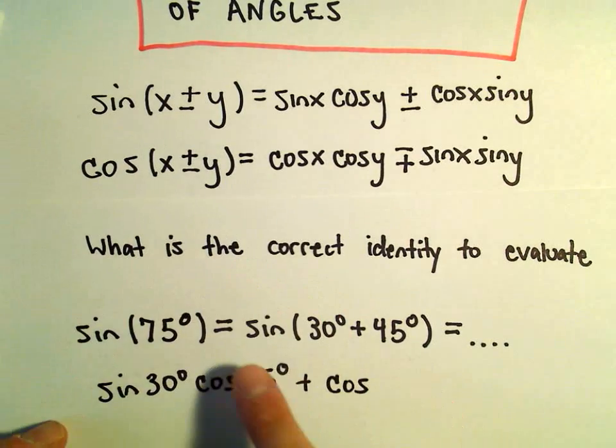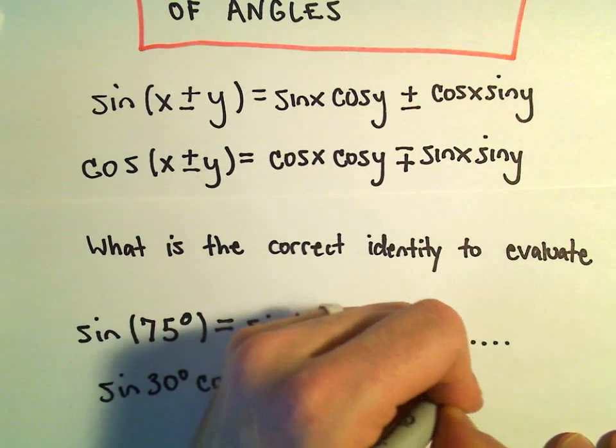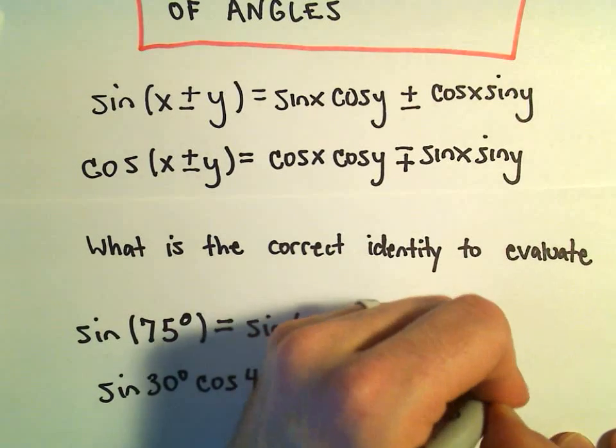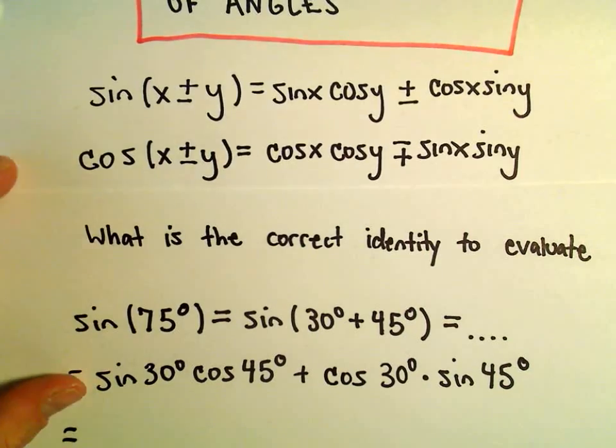Then we write cosine of the first angle, which is 30 degrees, and we multiply that by sine of the second one, which is 45 degrees. And now we can simply evaluate this.